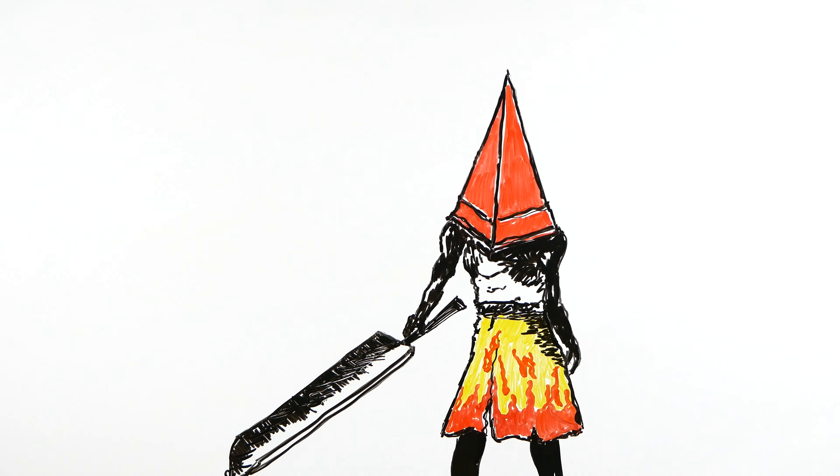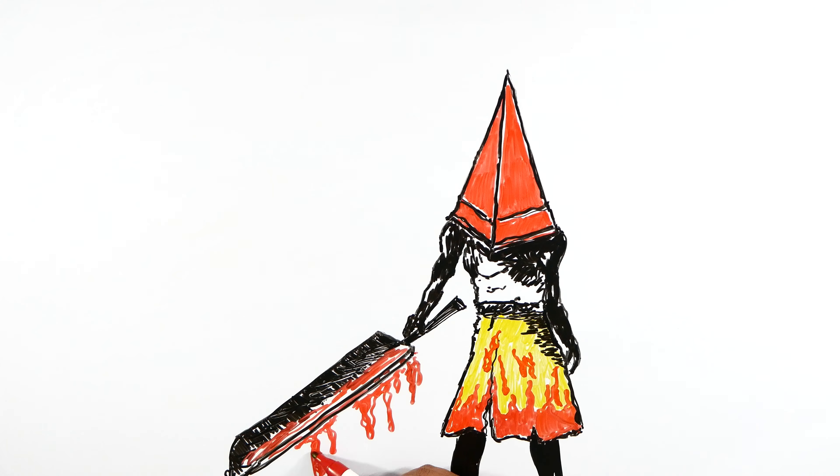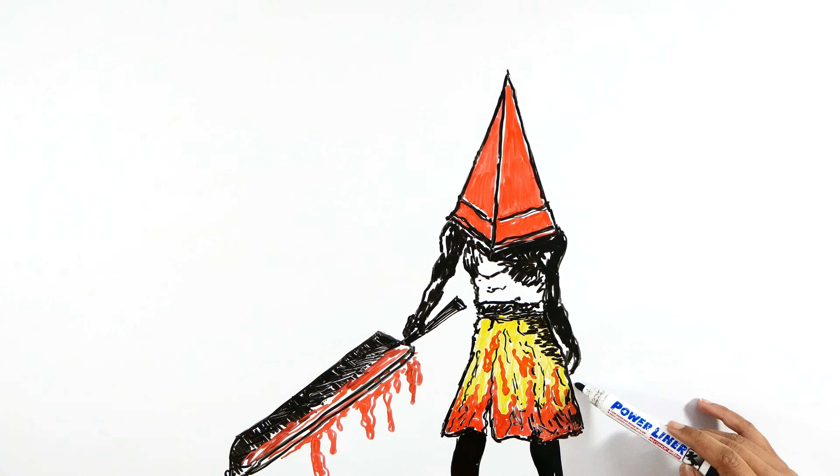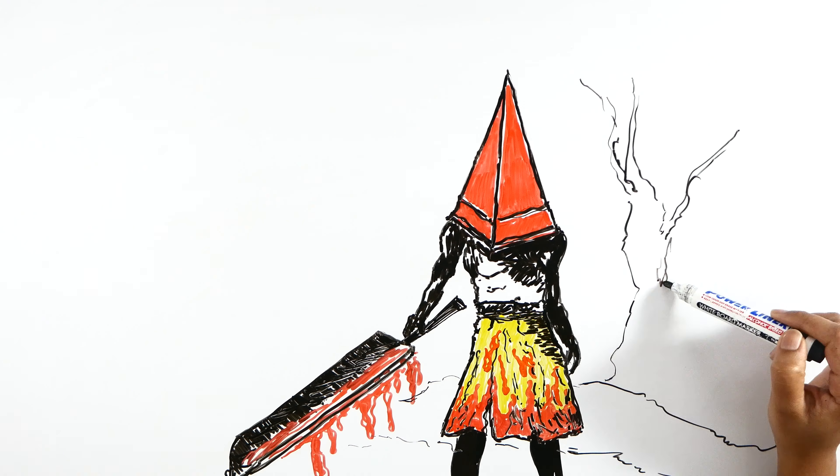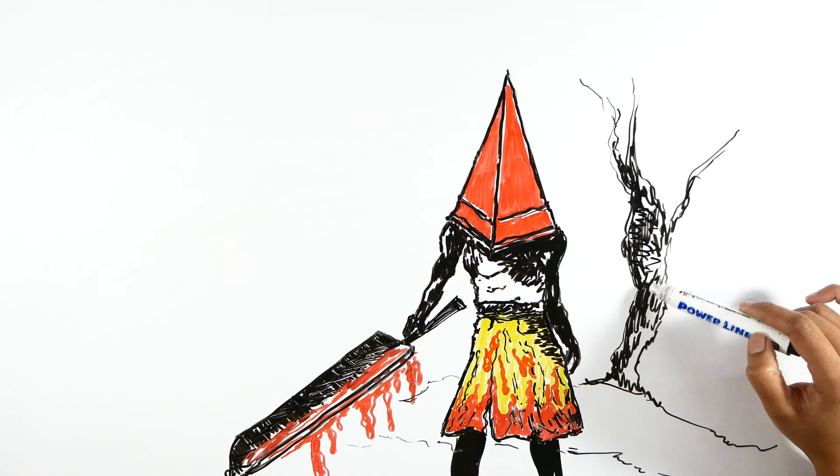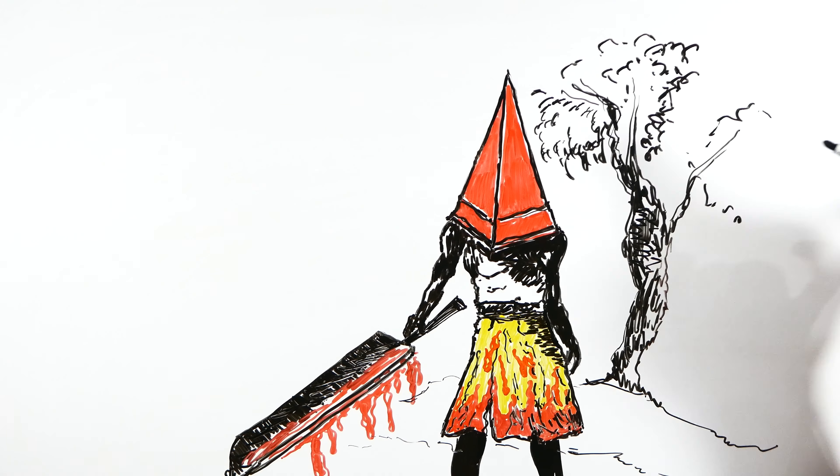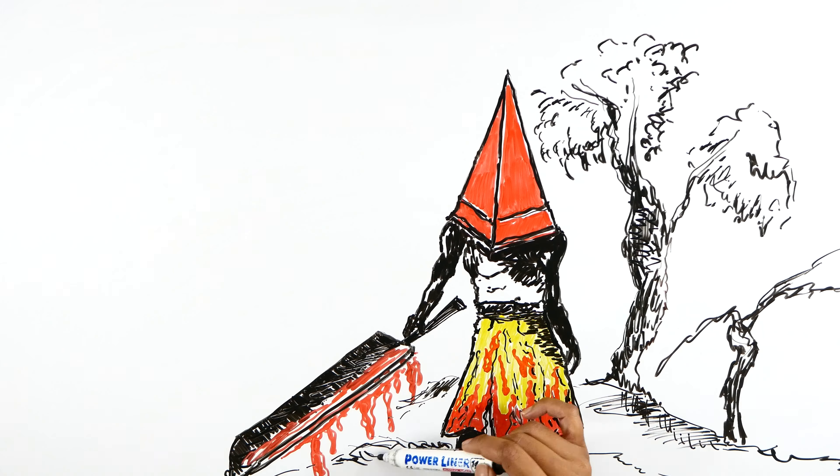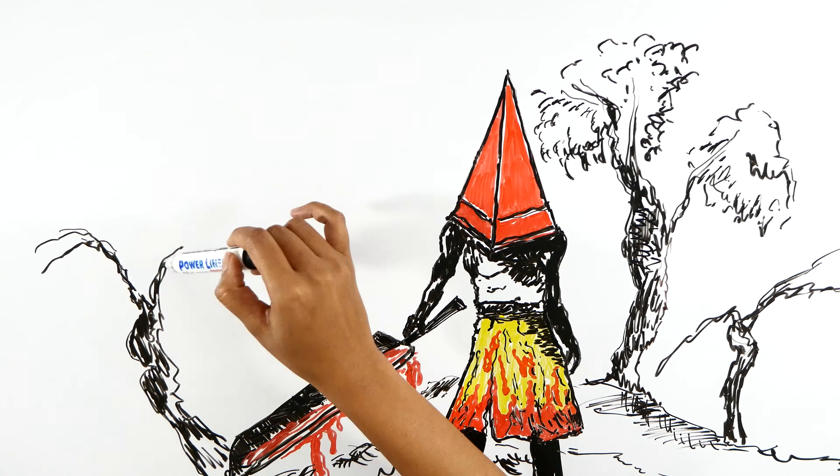The Pyramid Head has an overtly masculine appearance which makes him a butcher or an executioner who has the power to take another life. That is James' guilt playing out, evidently, where he thinks he has taken Mary's life.